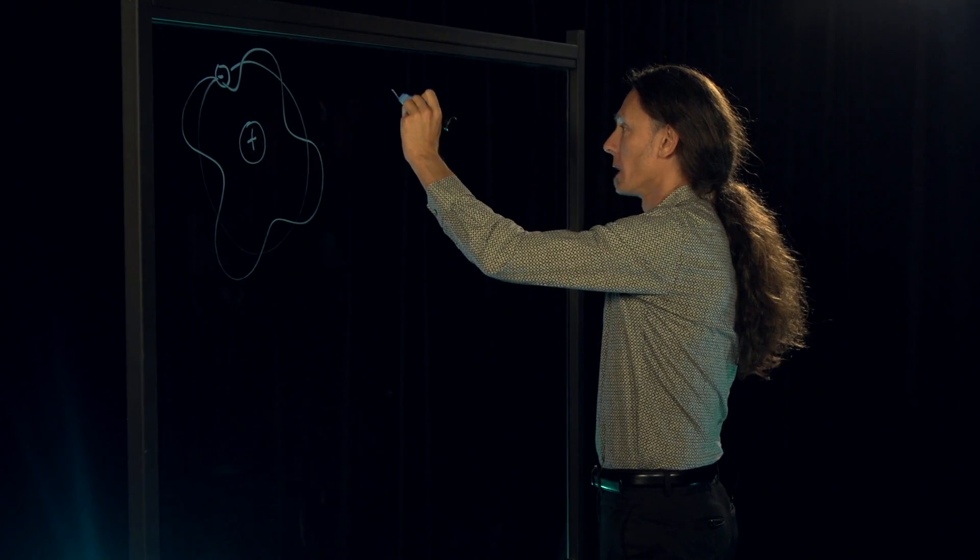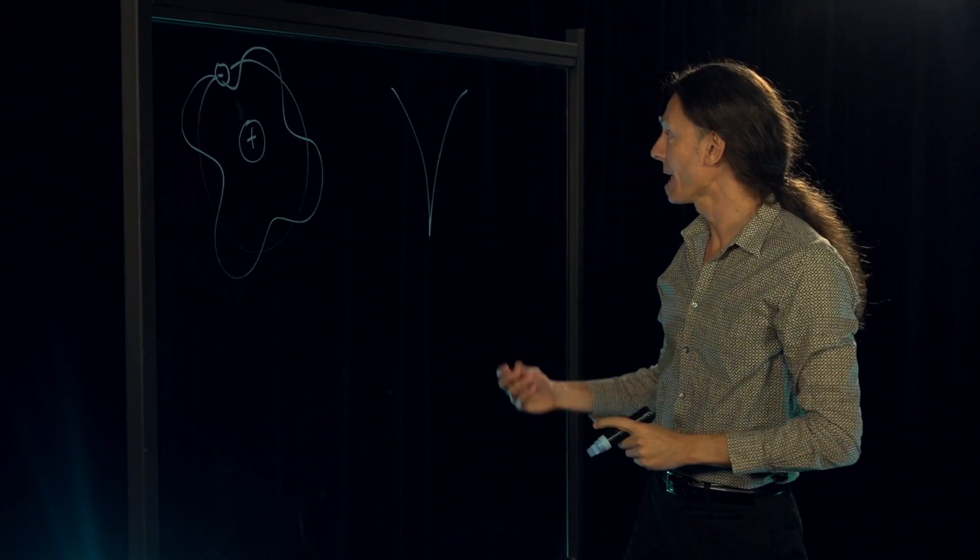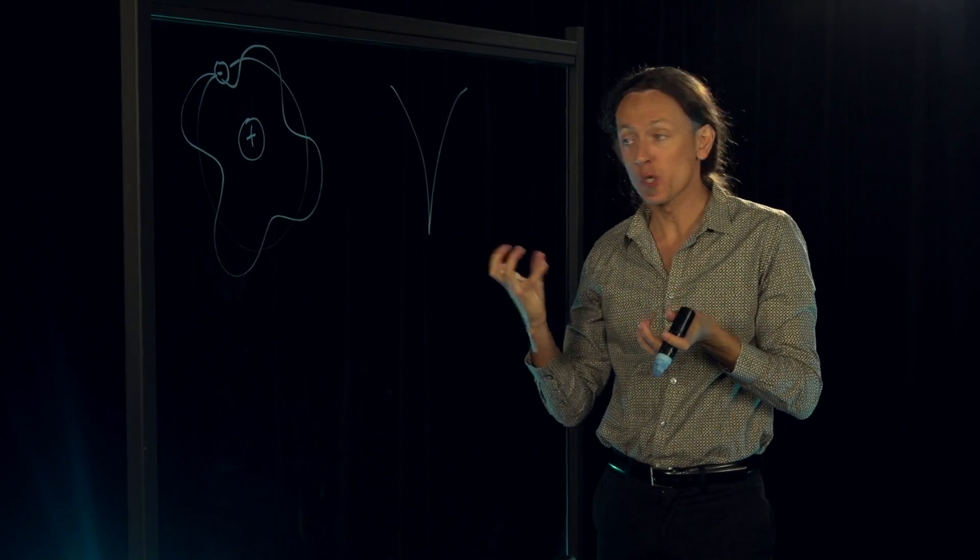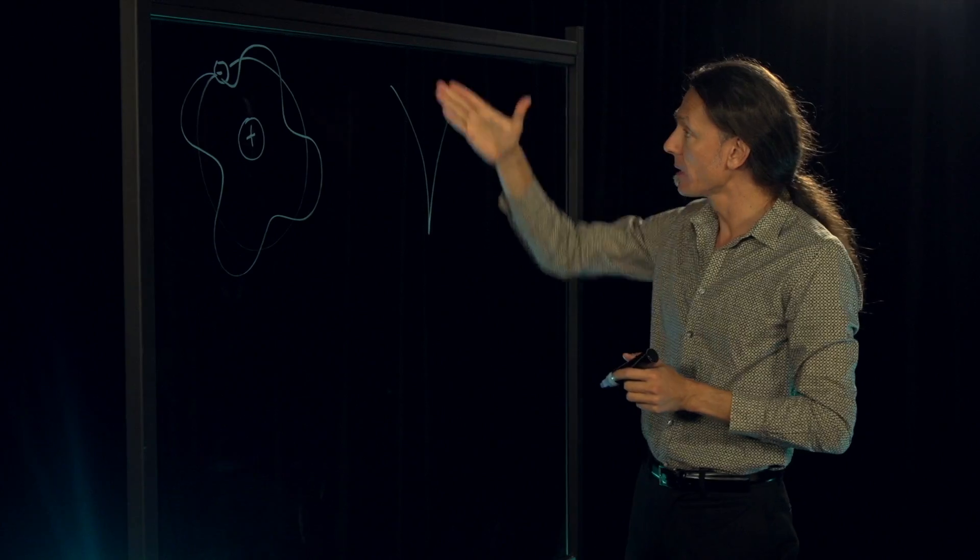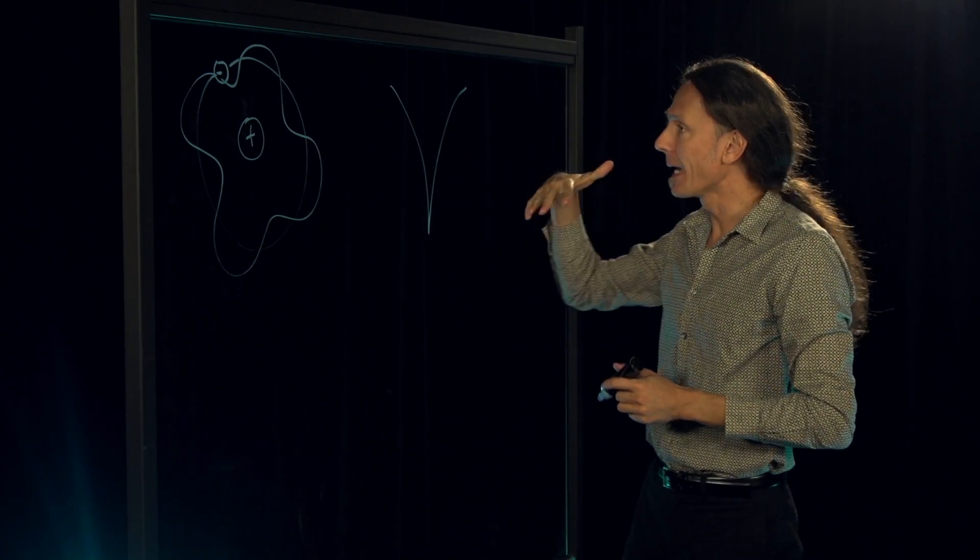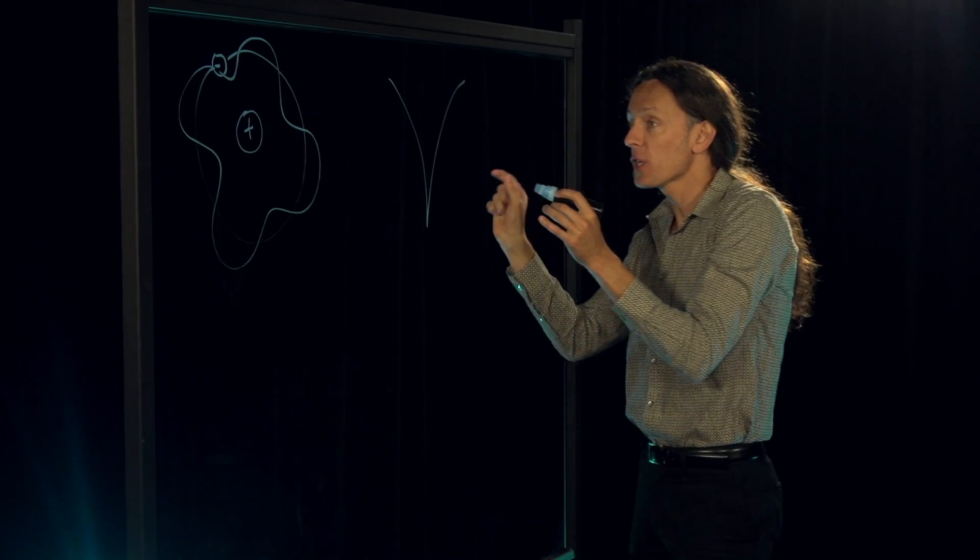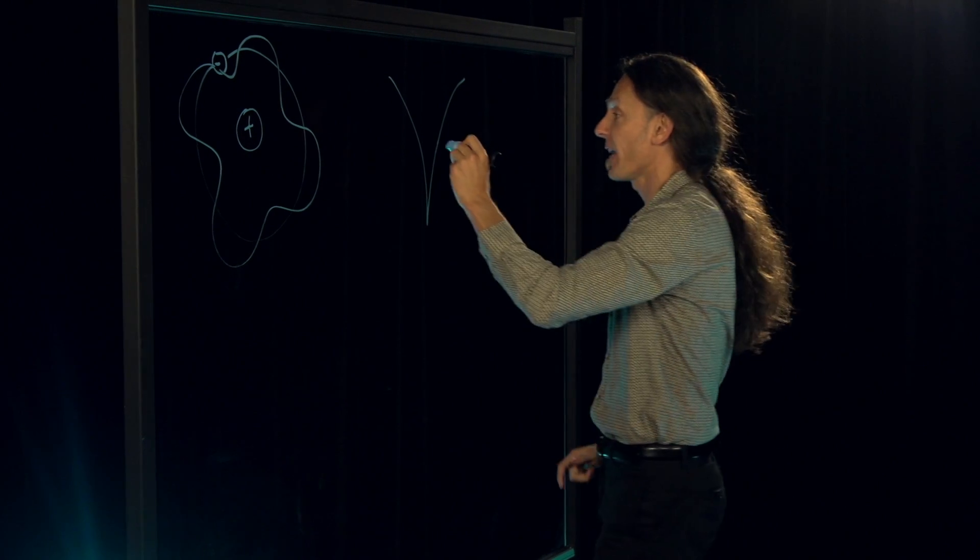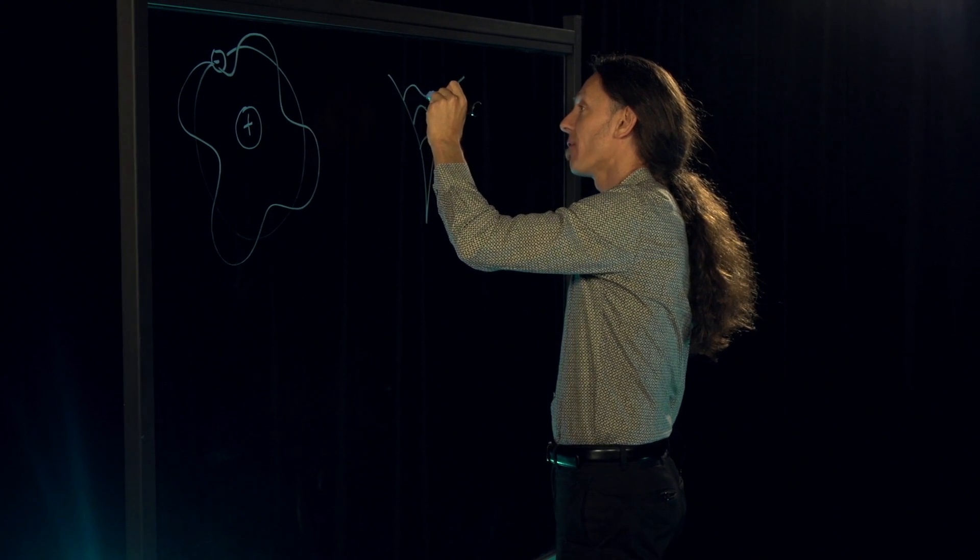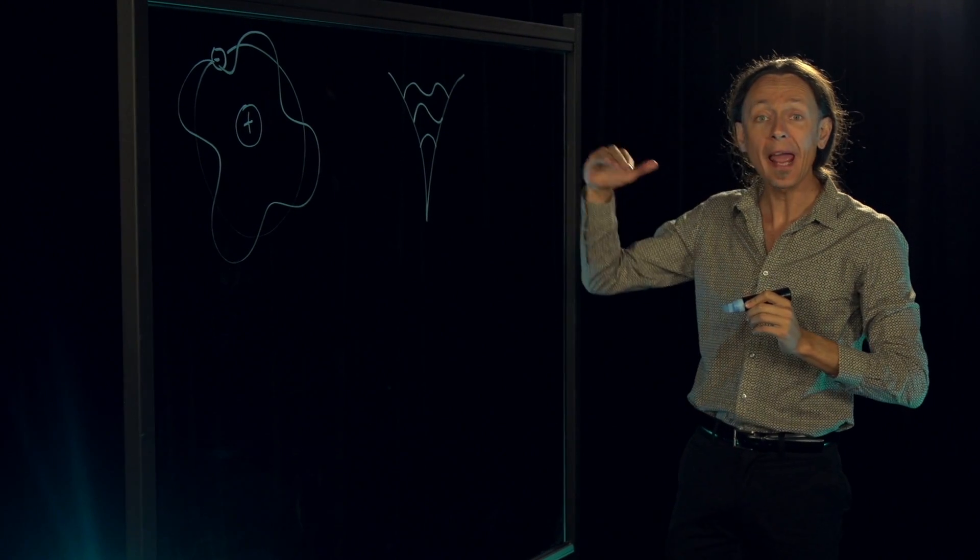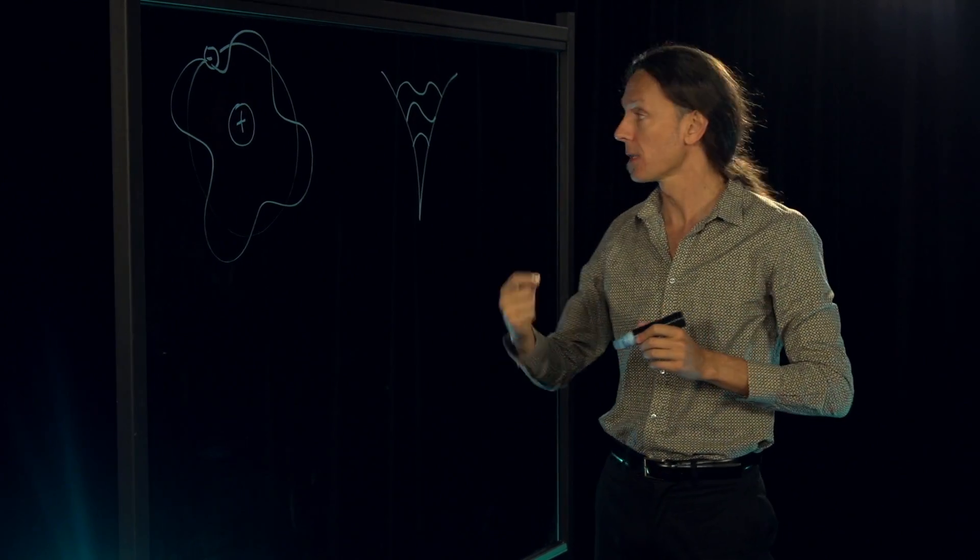A perhaps better way to visualize that is to think of the nucleus of the atom, the positive charge, as creating an attractive potential - a binding potential for the negative charge of the electrons. Inside this potential energy, the electron can live, but again because it's also a wave, it has to fit in the space that's available to it. So what we find is that the electron can only have a very well-defined set of energy levels that is determined by the wavelength associated with the mass of the electron.